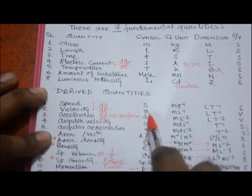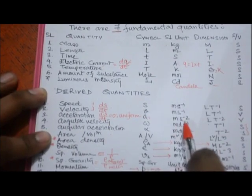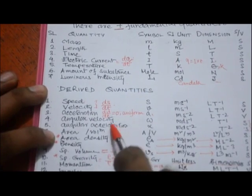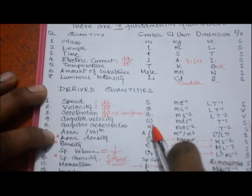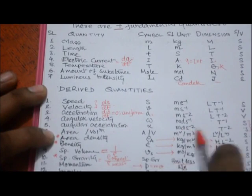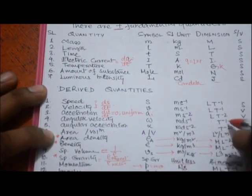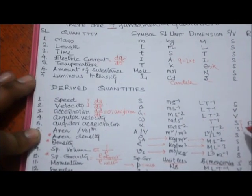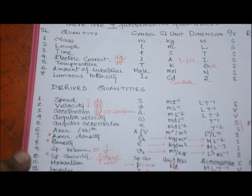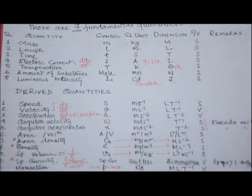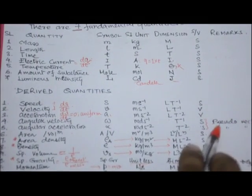Acceleration is denoted by 'a' with unit meter per second square. Next, angular velocity (omega) and angular acceleration (alpha) have units radian per second and radian per second square, with dimensions T⁻¹ and T⁻². These are scalar quantities, though often called pseudo-vectors.